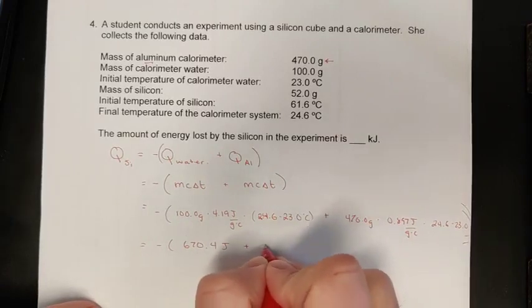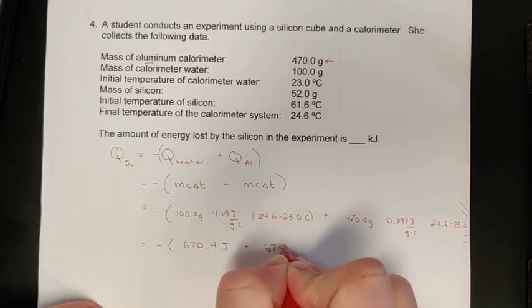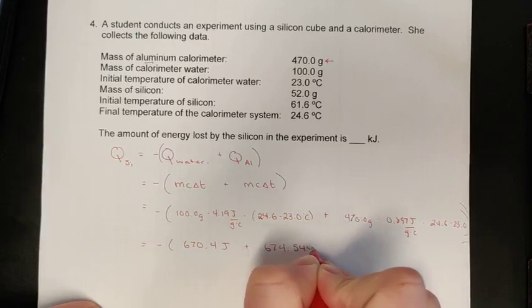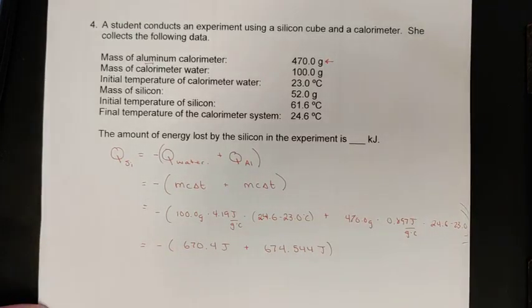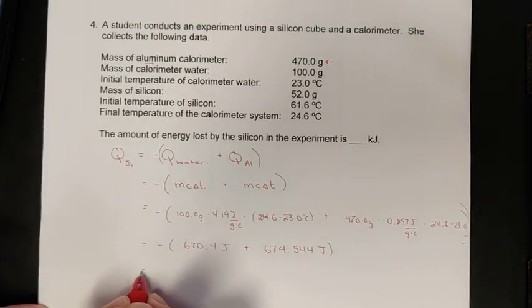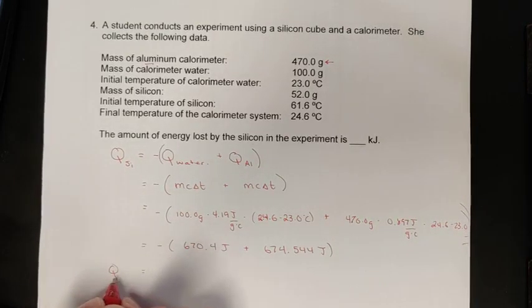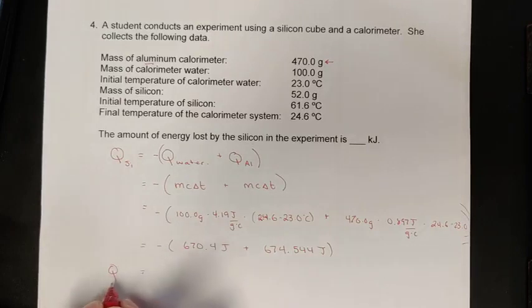What did we get with our aluminum here? We had a large aluminum container of 470 grams times 0.897 times that 1.6 degree temperature change. We couldn't ignore this time because we had 674.544 joules of energy gained by the aluminum as well.